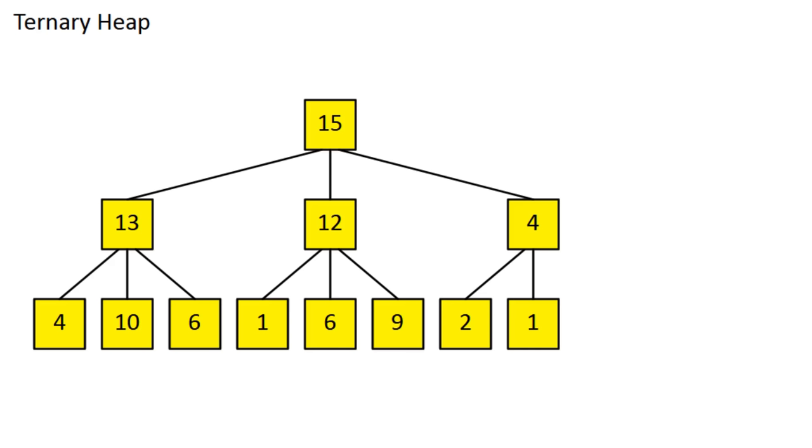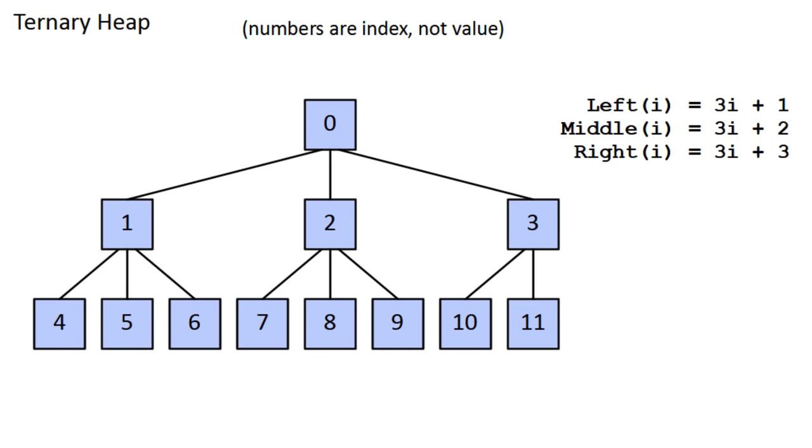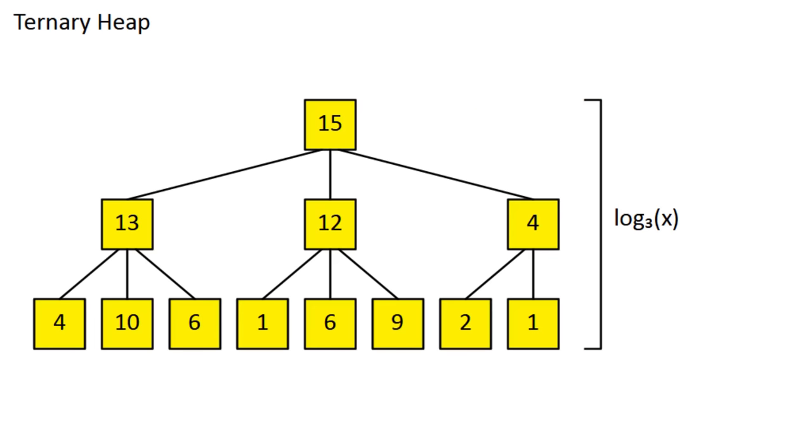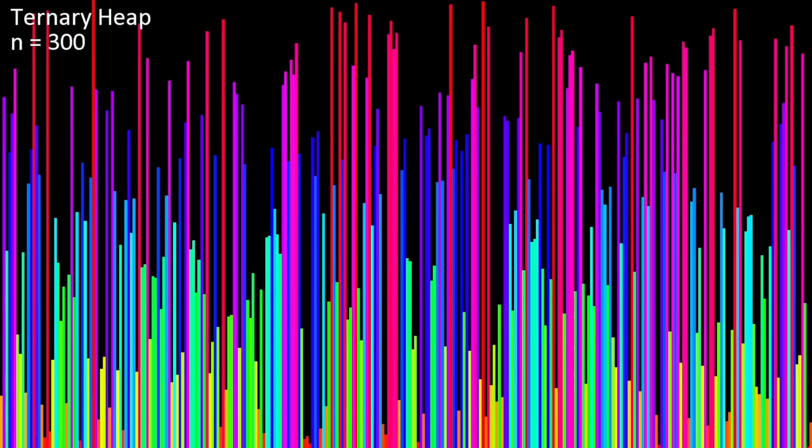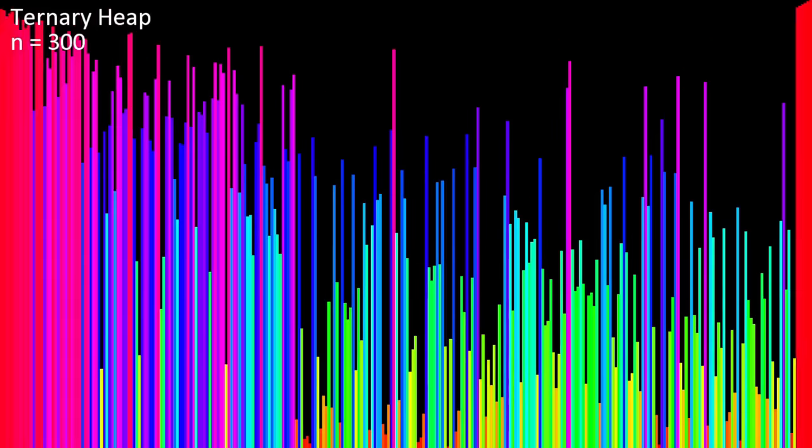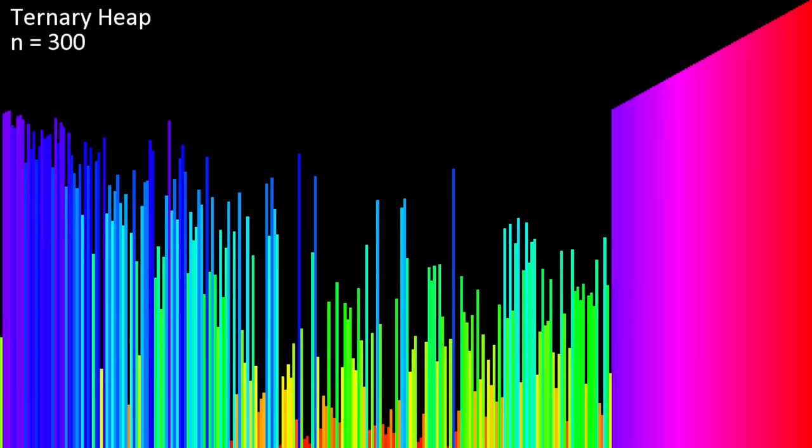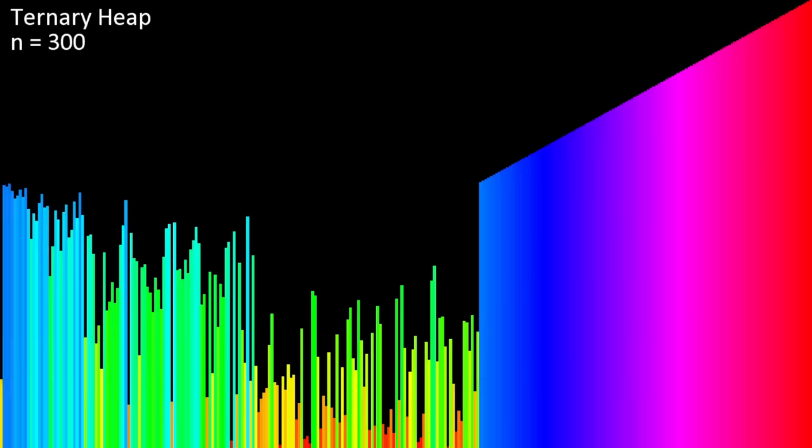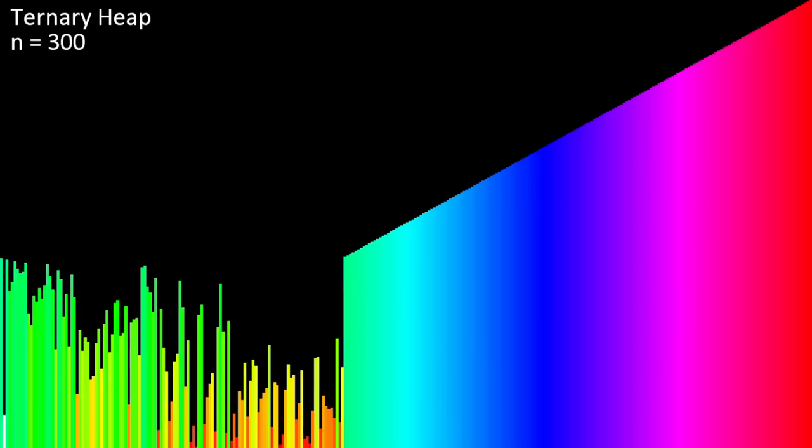Ternary heap sort is pretty self-explanatory. Now each node has up to three children and must be greater than or equal to each of them. Index i now has a left child at 3i plus 1, a middle child at 3i plus 2, and a right child at 3i plus 3. The height of a ternary max heap is log base 3 of n, 63% the height of a binary max heap. This would make the max heapify faster, but finding the largest of the three children requires an extra comparison, so it's not really any faster.